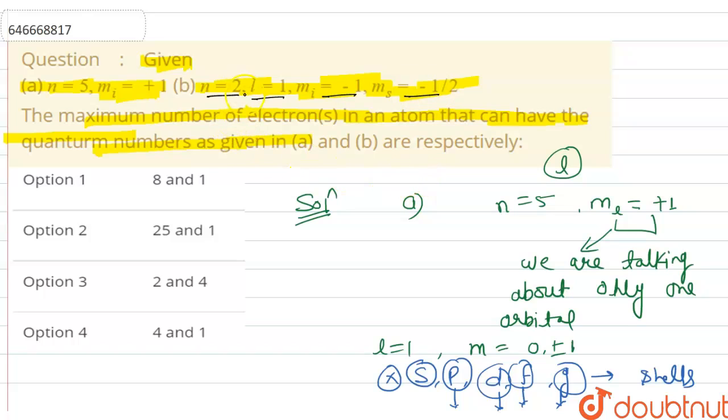That will be 2p orbital. And ml equals to minus 1 means we are talking about only one orbital. ms equal to minus half means we are talking about only one electron.